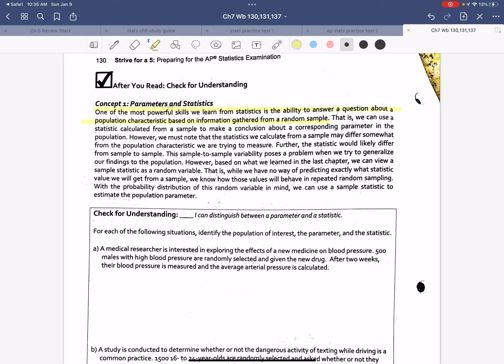That is, we can use a statistic that we calculate to make a conclusion about the whole population. However, we must note that the statistic we calculate from a sample may differ somewhat from the population characteristic. Further, the stat would likely differ from sample to sample. This sample to sample variability poses a problem when we try to generalize our findings to the population. However, based on what we learned in the last chapter, we can view a sample statistic as a random variable.